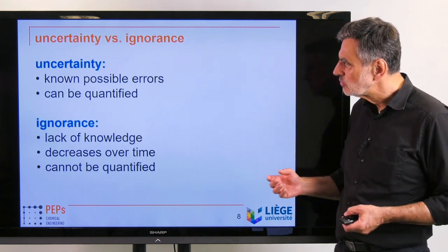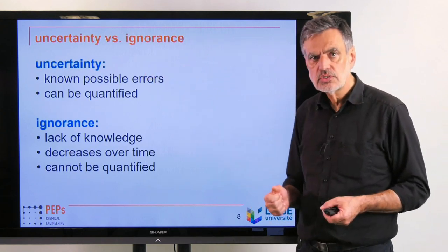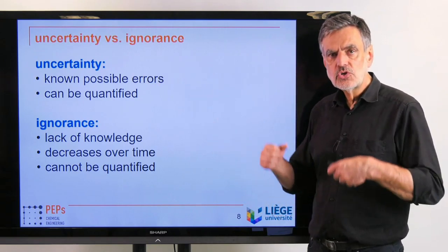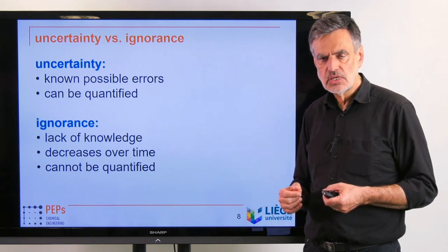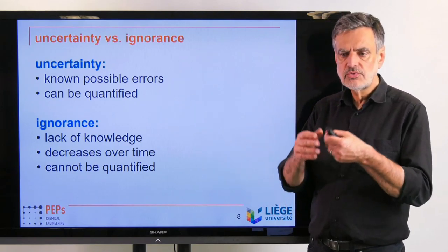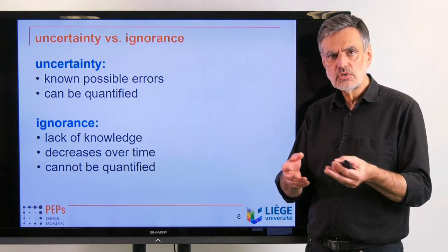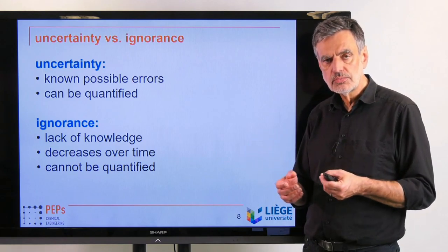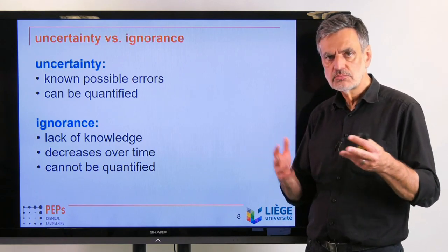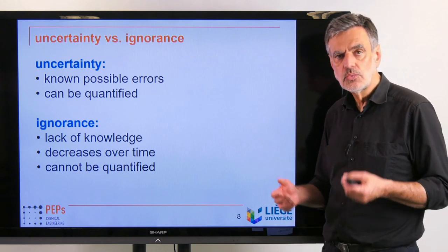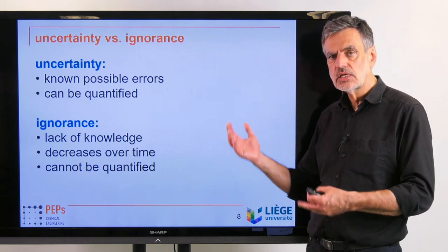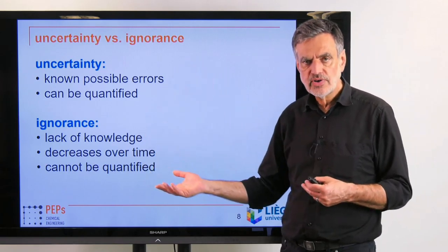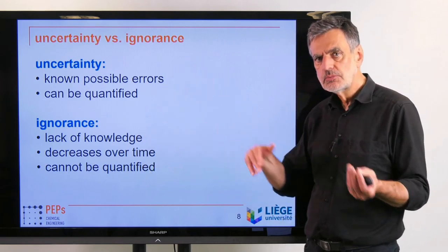In order to understand that, we have to realize that we are predicting the future — and actually we can't predict the future. It's impossible. The future is open. Individual decisions and individual situations may change the future completely: a global economic crisis, elections in a major country where somebody else is elected — these influence the world economy, wealth in countries, the number of children people have, and so on.